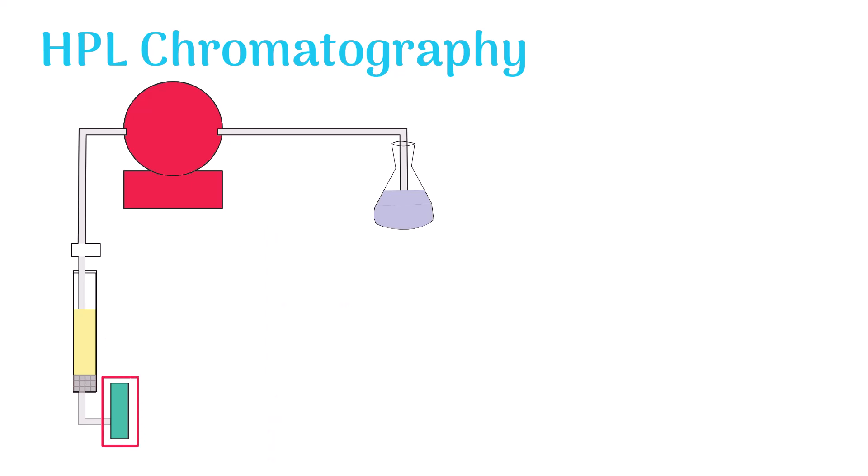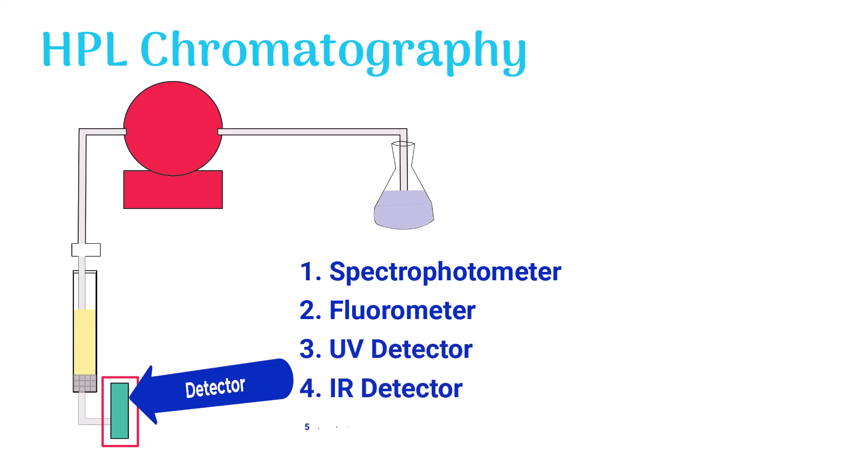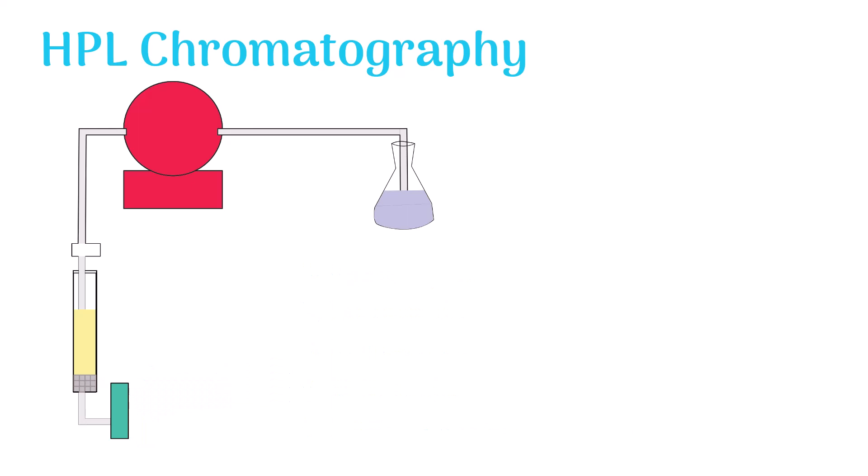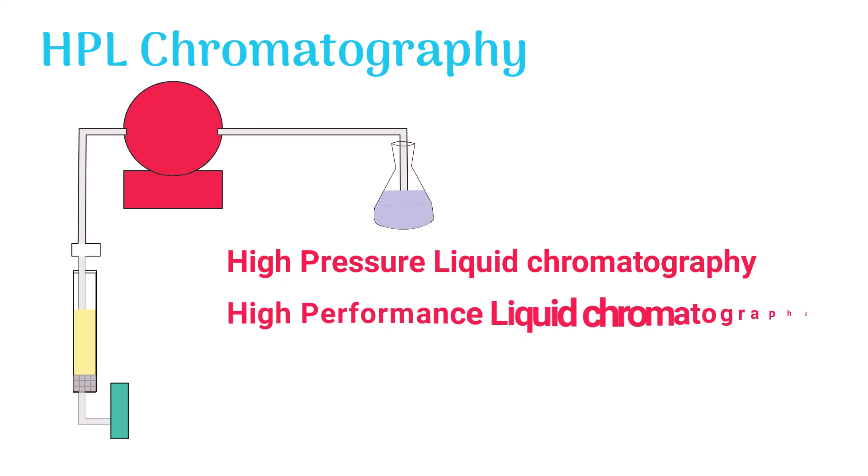Different types of detectors are used in HPL chromatography like spectrophotometer, fluorometer, UV detector, IR detector, electrochemical detector, etc. HPL chromatography is also called high pressure liquid chromatography or high performance liquid chromatography.